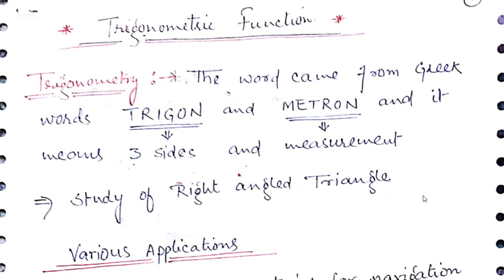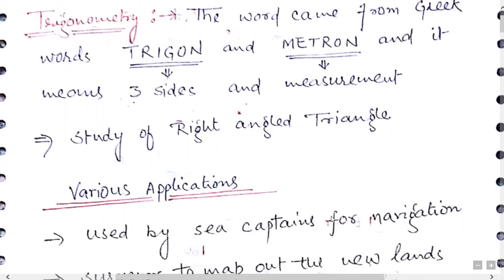What is the meaning of trigonometry? Trigonometry is basically comprised of two Greek words — trigon and metron — meaning three sides measurement. Later on, the study of right angle triangles came into existence, so trigonometry is the branch of mathematics in which we study about the right angle triangle.